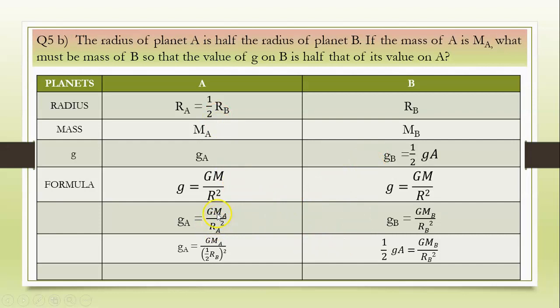GA is equal to G into MA upon RA square. GB is equal to G into MB upon square of RB. GA is equal to G into MA. Instead of RA, we will put the relation with RB: half RB the whole square. Similarly, here in the B column, instead of GB, we will write the relation with GA. So it will be substituted as half GA is equal to G into MB upon RB square.